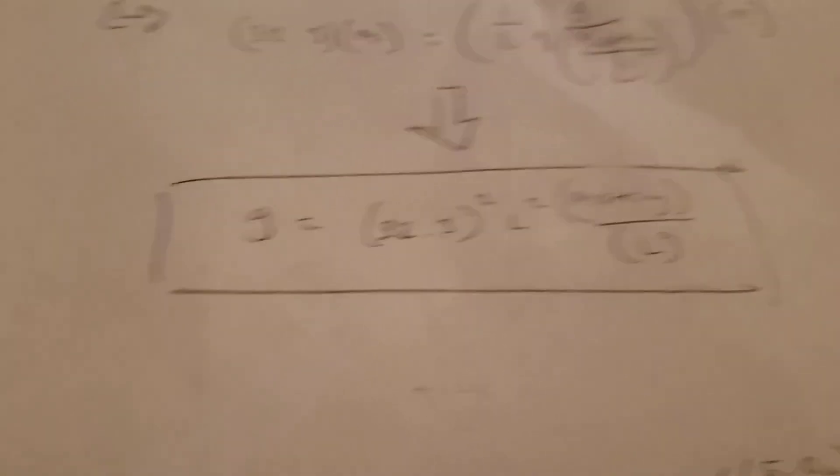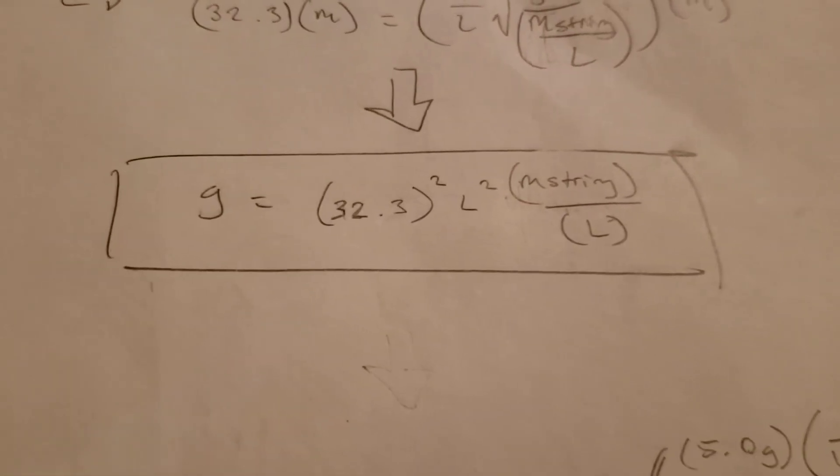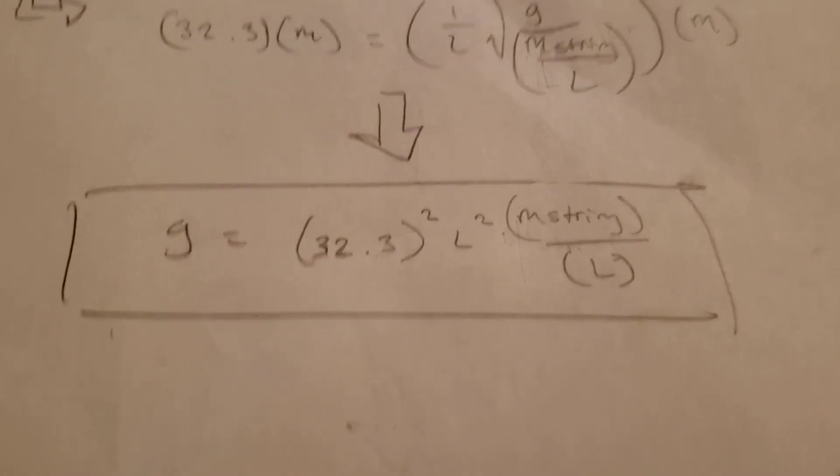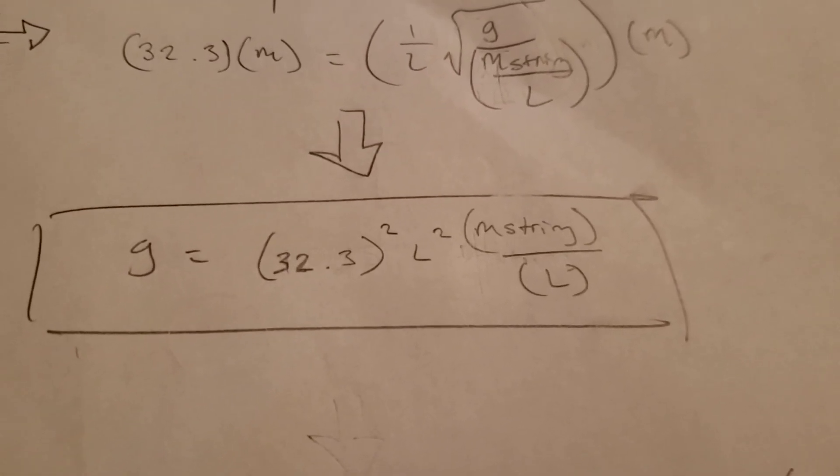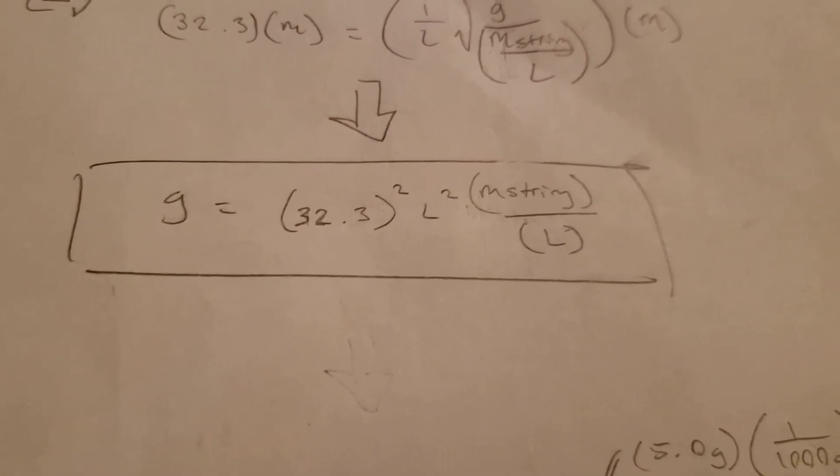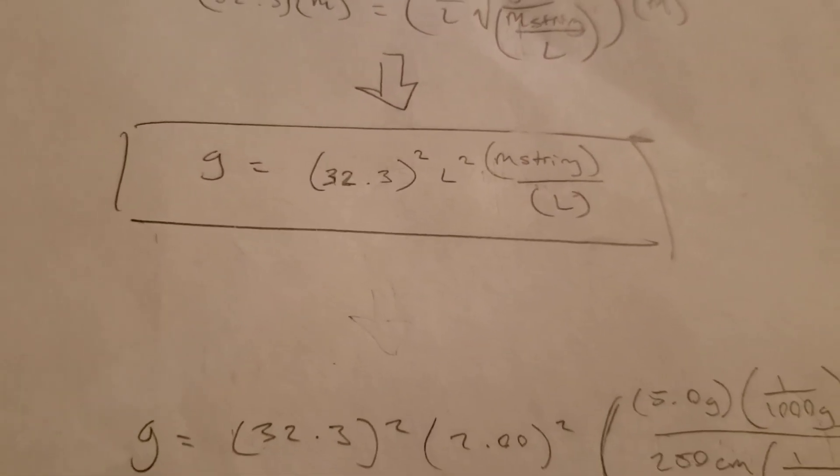And, this is our answer. We know it's an answer because it's what we want, G, in terms of only things that we know. Length is a given variable in the problem. Mass of the string is a known value as well. And, of course, this slope is a number that we gathered already.